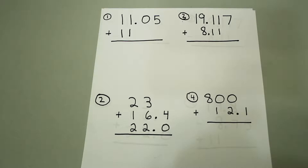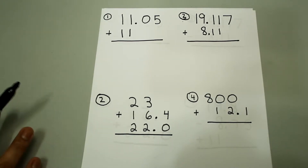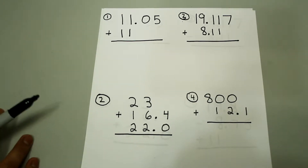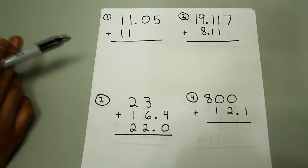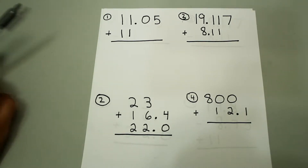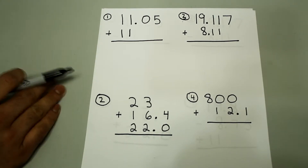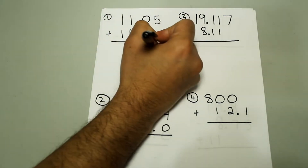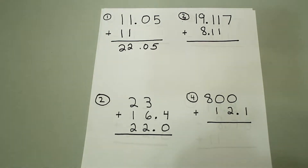The first one we have is 11.05 plus 11. When you are adding or subtracting, or even when you are multiplying or dividing, don't add any placeholders — that will change the number of decimal places and also the number of significant figures. So just leave it the way it is. I'm going to go ahead and add straight down: 5, 0, 2, 2 — so that's 22.05.